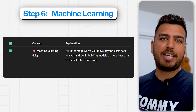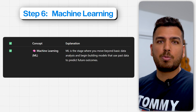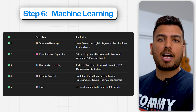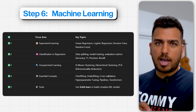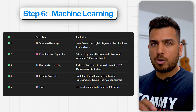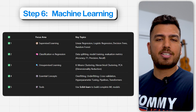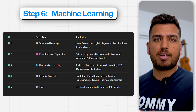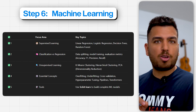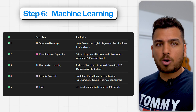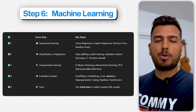When it comes to machine learning, start with supervised learning, which includes linear regression, logistic regression, decision trees, and random forests. You'll have to understand classification versus regression problems, how to split data, how to train models, and evaluate them using metrics like accuracy, F1, precision, and recall. Then move to unsupervised learning, which includes k-means clustering, hierarchical clustering, and PCA for dimensionality reduction. Important concepts to master include overfitting and underfitting, cross-validation, hyperparameter tuning, and pipelines and transformers. Use scikit-learn throughout to build your very first model.